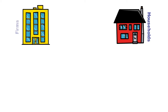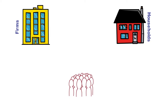The second major building block of the circular flow is firms. Firms are the producing sector of the economy — they produce output goods and services, which households can spend on and purchase.